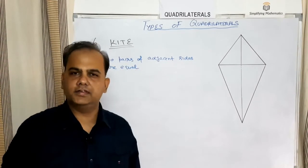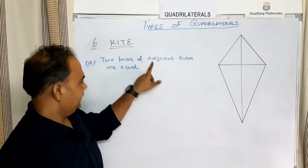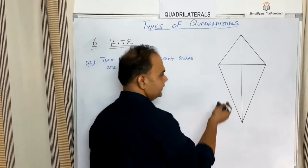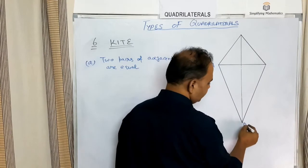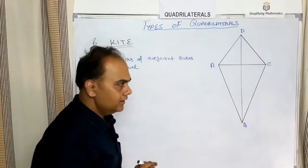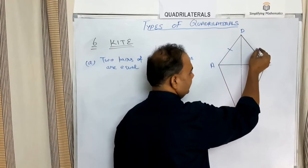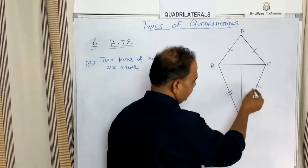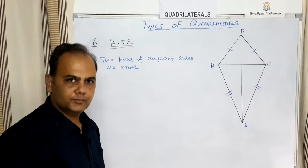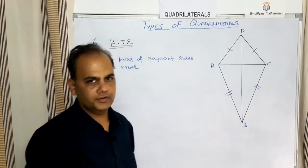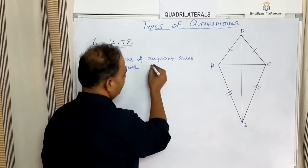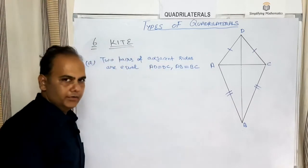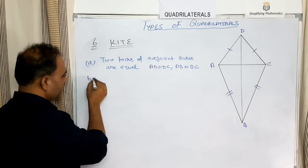The next type of quadrilateral is a kite. The first property of a kite is that two pairs of adjacent sides are equal. In a kite ABCD, AD equals CD and AB equals BC.